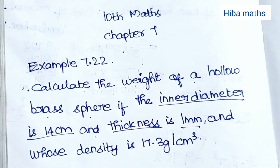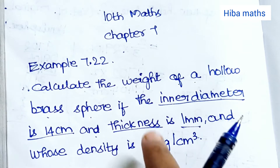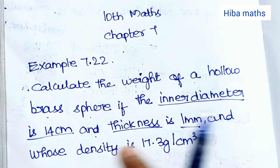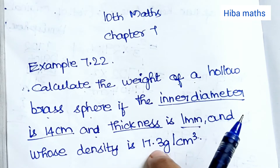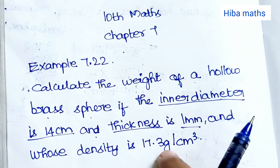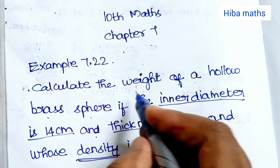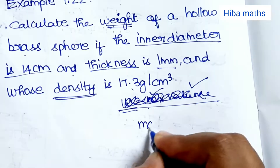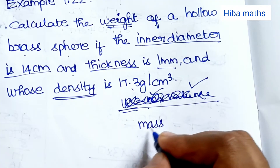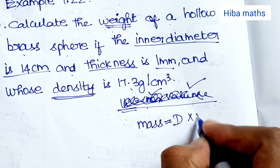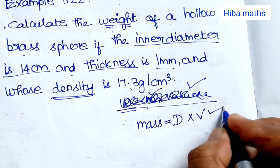The outer diameter equals inner diameter plus thickness, and the inner radius is less than the outer radius. The density is 17.3 grams per cm³. Mass is equal to density into volume, so first we find the volume.